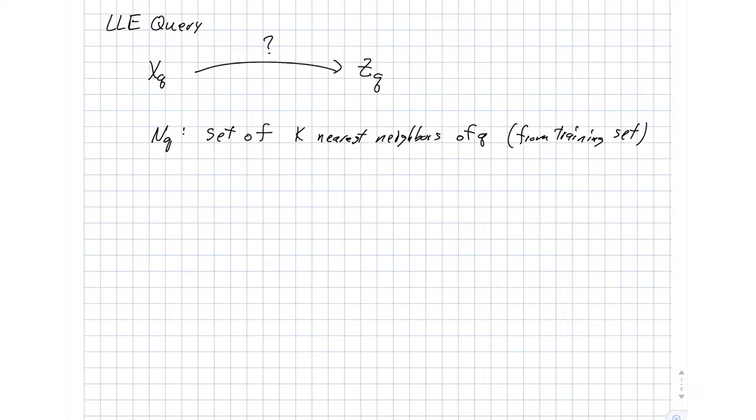And using the same process that we talked about during the learning algorithm, we're going to then compute a set of weights, WQJ, and that's for every J in this set, NQ.